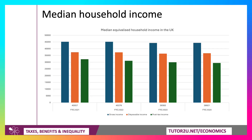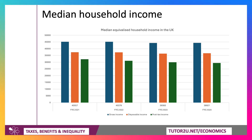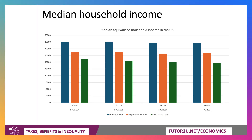If we take median household incomes over the last four years, we can see that in equivalised terms — that's adjusted for household size — gross incomes have actually come down, and so too have disposable incomes and post-tax incomes. So median household income over the last few years has actually fallen. In part, that is a result of what's called fiscal drag. The government has kept income tax allowances frozen for several years now, so more people are paying more in income tax. If they get a pay rise, they end up perhaps moving into a higher tax bracket — starting to pay tax at 20% or 40%. So fiscal drag has been one factor bringing down equivalised household income.